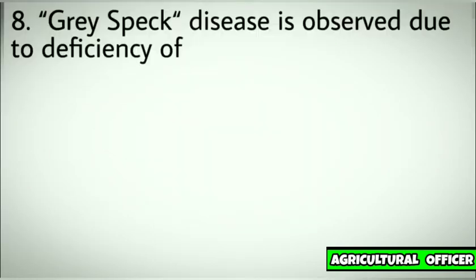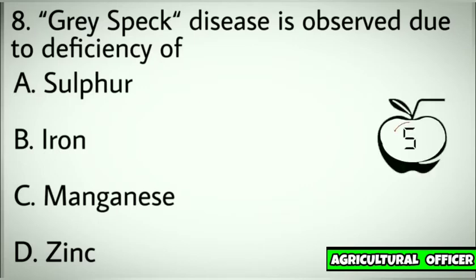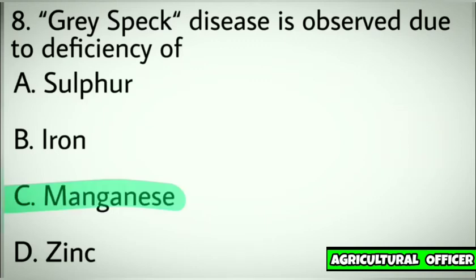Question number eight. Gray speck disease is observed due to deficiency of. Options: A. Sulfur. B. Iron. C. Manganese. D. Zinc. Correct answer: C. Manganese.